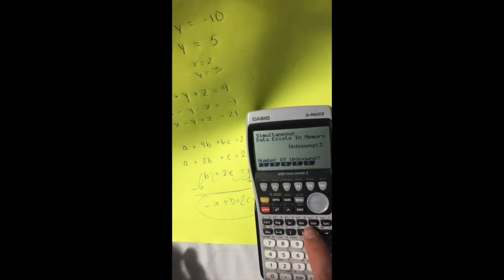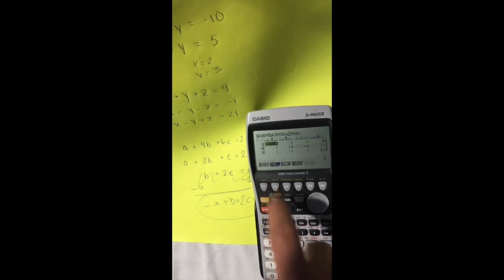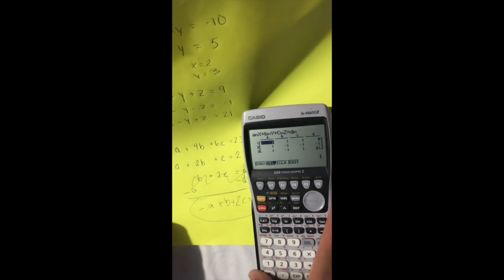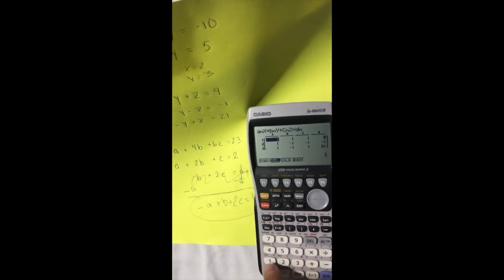And here we go. So we're going three unknowns again. And we have 1a, 4b, 6c, and it's equal to 23.